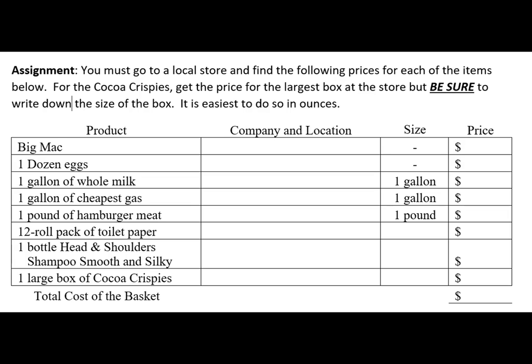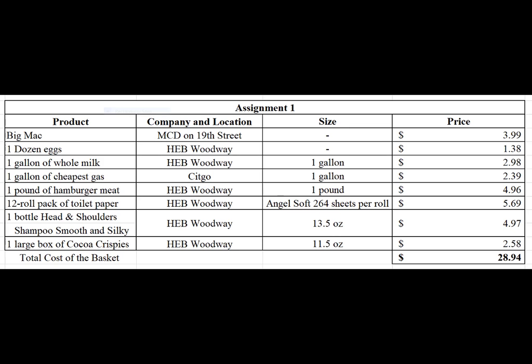In assignment one, students are sent to their favorite stores and asked to fill out the price and size information in the table. The first table shown is what students will fill out, and the second shows my data that we will use throughout the demonstration. The only strange part is the size of the toilet paper — some rolls are single ply, some are double, some packs have 124 sheets per roll and others have 248. It's just a fun way to get students to see that their research isn't always a straight and easy path.